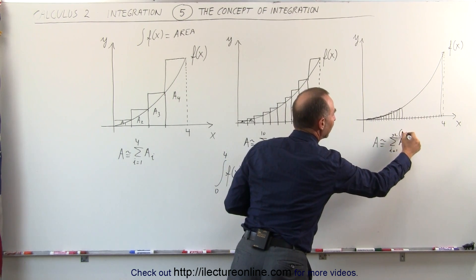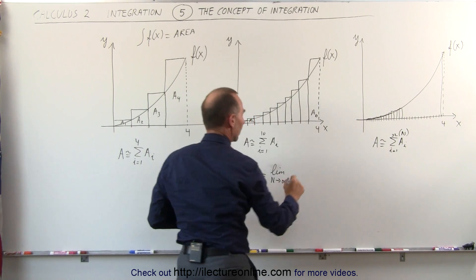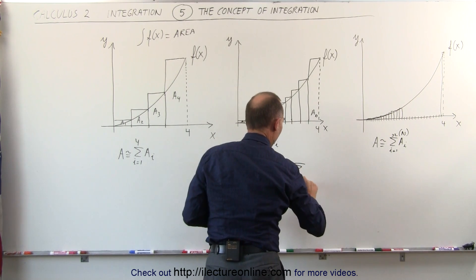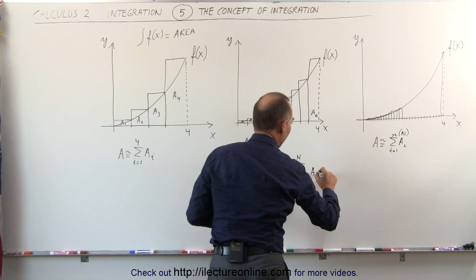If we call this number n, then the limit where n goes to infinity of the sum from i equals 1 to n of all the a sub i's.